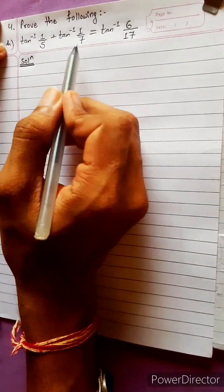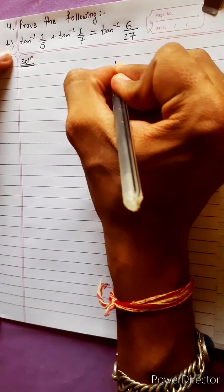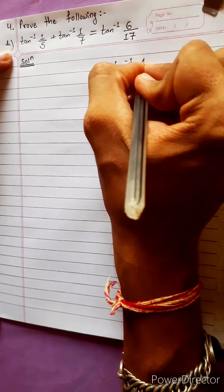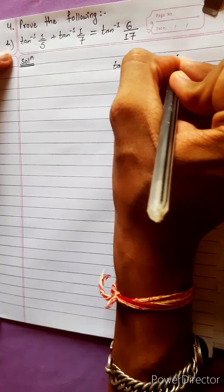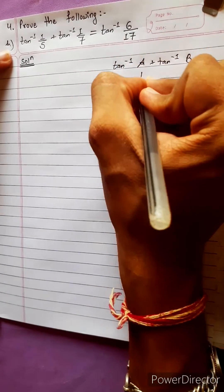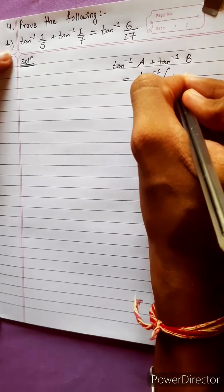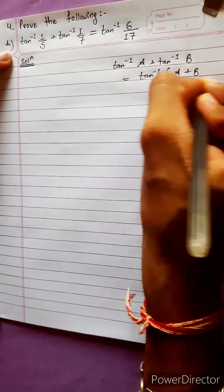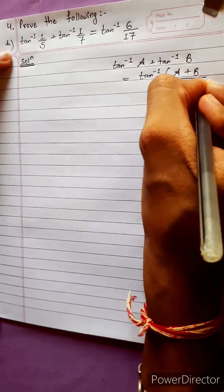Proof the following. We solve the LHS using a formula. Let's start with the formula: tan inverse A plus tan inverse B equals tan inverse bracket A plus B upon 1 minus AB.